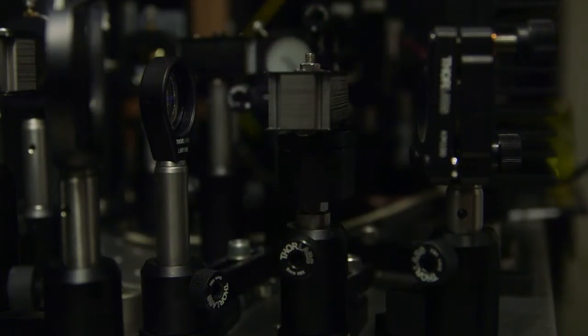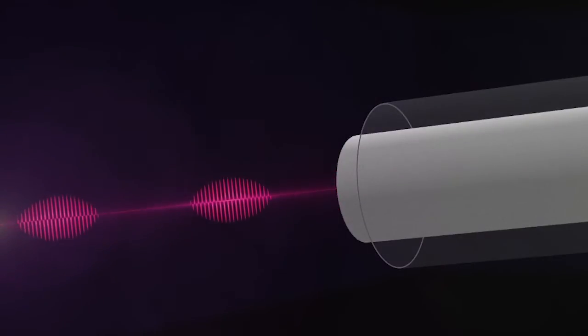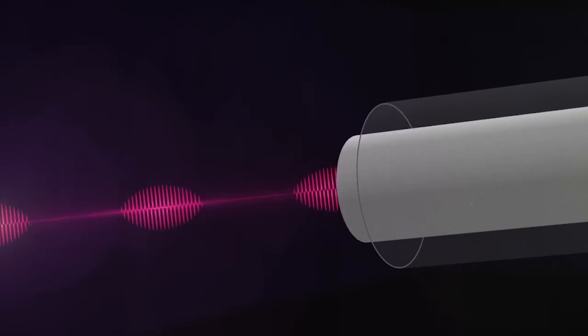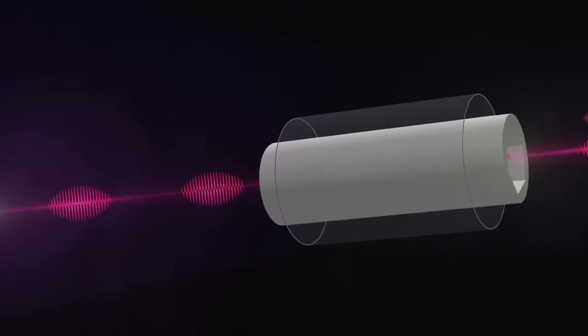In particular, we are looking at the state of light called bright squeezed vacuum. To generate this state of light, a strong laser beam is sent into a crystal or fiber with special properties.